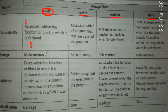As for where it is stored, the auto variable is stored in main memory. Regarding existence, it exists when the function or block in which it is declared is entered, and ceases to exist when the control returns from that function or block. Once we go outside the block its visibility is lost. The default value is any garbage value — if we do not initialize our variable it will store a garbage value.